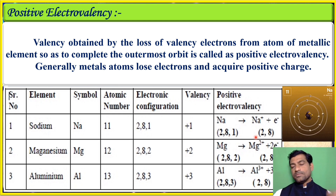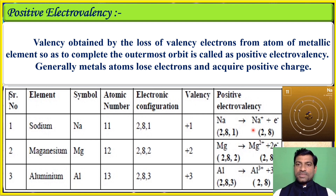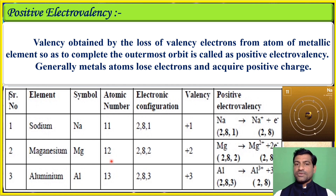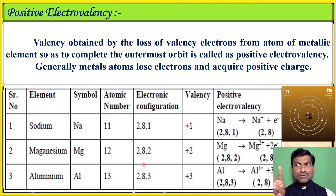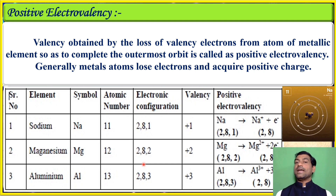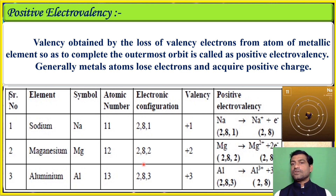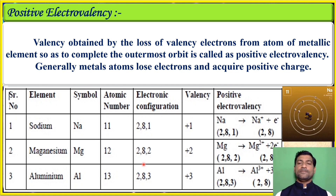When sodium donates one electron, it has two and eight electrons in its orbit and acquires a positive charge. For magnesium, the atomic number is 12 and the electronic configuration is 2, 8, 2 — the first orbit has two electrons, the second has eight, and the third has two. Magnesium can donate two electrons and acquires a dipositive charge, leaving it with a configuration of two and eight.